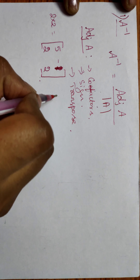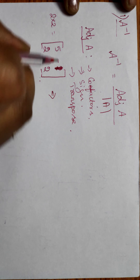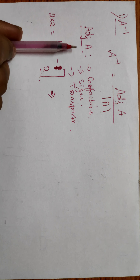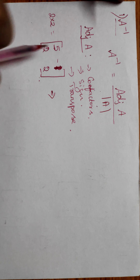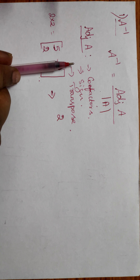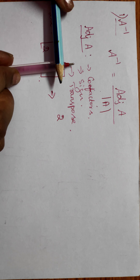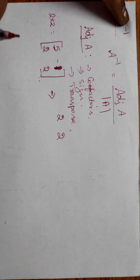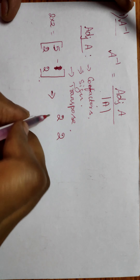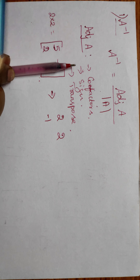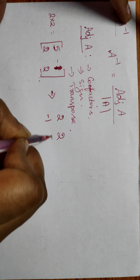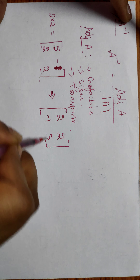We have to find the cofactors for each individual term. For element 5, we eliminate the corresponding row and column — the remaining element is 2, so the cofactor of 5 is 2. For element -1, eliminating the corresponding row and column leaves 2. For element 2, eliminating the corresponding row and column leaves -1. For the last element, eliminating the corresponding row and column leaves 5.